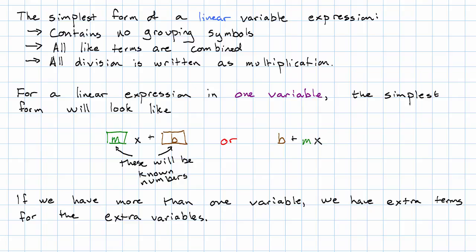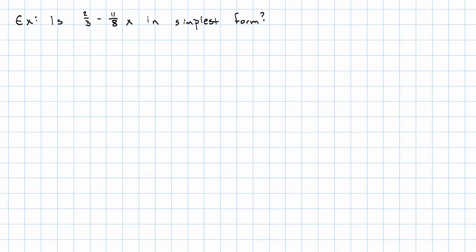So let's look at some examples and see if they're in simplest form. Is this expression in simplest form, 2/3 minus 11/8 X? Well, yeah. We have two terms. They're not like terms. They can't be combined. They're all written either as a constant or as a number times the variable. And there are no grouping symbols.